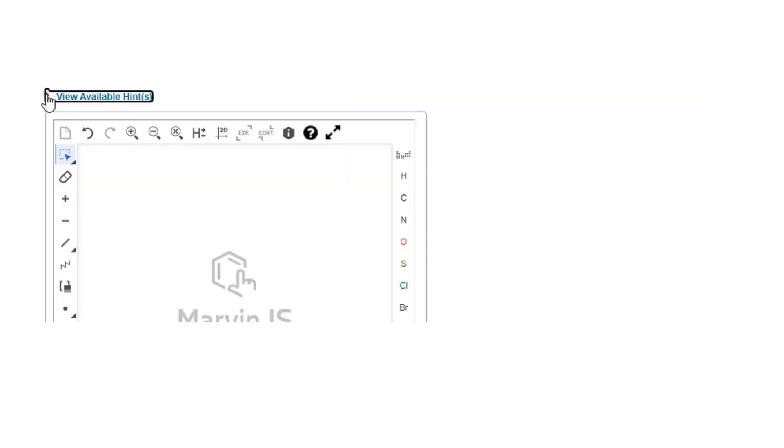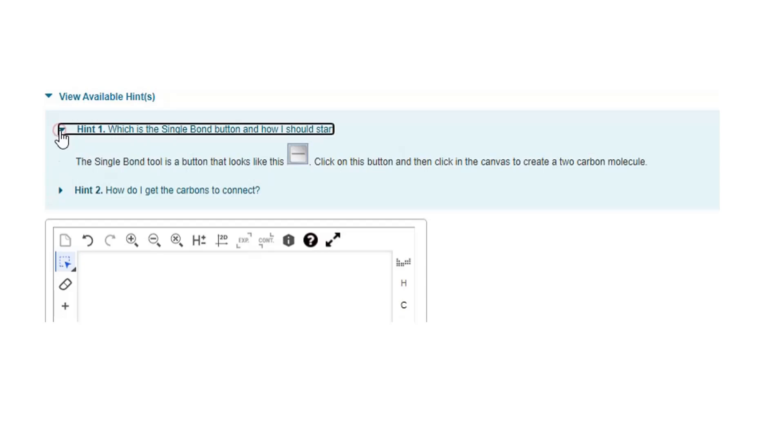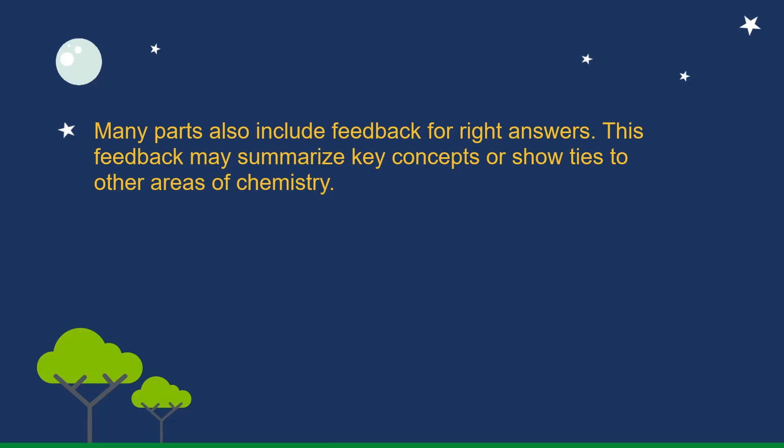For additional help, hints step through the problem. It's not necessary to finish the hints. As soon as you grasp what the hints are telling you, you can go back and finish the main part. Many parts also include feedback for right answers. This feedback may summarize key concepts or show ties to other areas of chemistry.